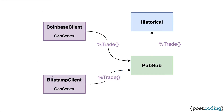When the Coinbase client or BitSum client receives a trade event, this event is mapped to a trade struct. This struct is then broadcasted to a PubSub topic. By using PubSub, we can decouple the clients from the rest of the application and easily subscribe from other processes to receive real-time trades.